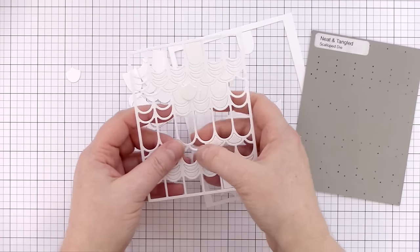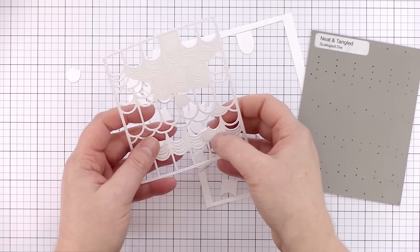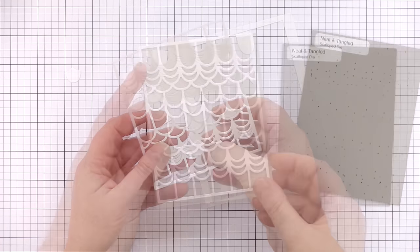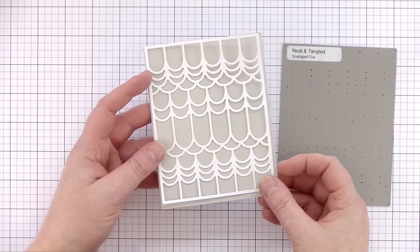There's also a scalloped die in the February release. I've cut the die from white card and it looks lovely overlaid on fog card, but I think what I really want to do with this is lay it over a lovely watercolored piece.